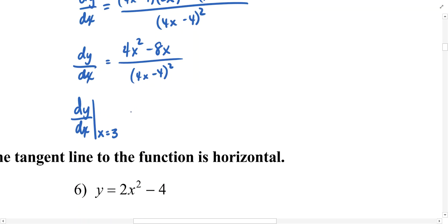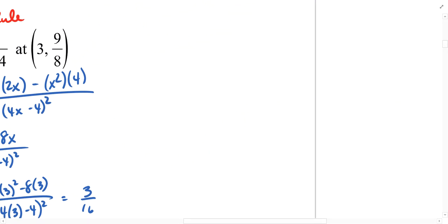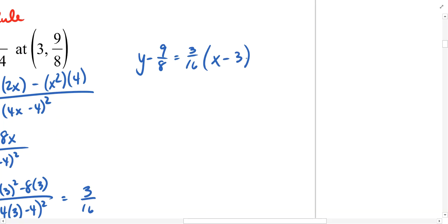We need to utilize dy/dx and evaluate it at a given x coordinate. We can indicate that with a vertical bar and an x equals at the bottom of it. We're evaluating this at x equals 3. So 4 times 3 squared minus 8 times 3, over 4 times 3 minus 4 squared. Using a calculator, this simplifies to 3/16. I'll leave that as a fraction instead of the decimal 0.1875 — I just like the look of it better. Now that we have an x coordinate, a y coordinate, and a slope, we can utilize our point-slope formula. y minus 9/8 equals the slope 3/16 times x minus 3.